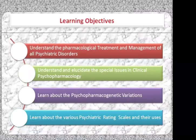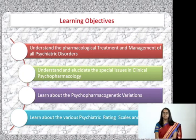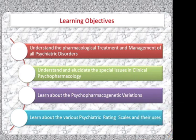The learning objectives for this course include understanding the pharmacological treatment and management of all psychiatric disorders, understanding and elucidating the special issues in clinical psychopharmacology, learning about psychopharmacogenetics variation, and learning about various psychiatric rating skills and their uses.